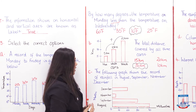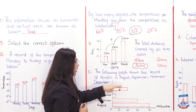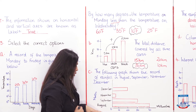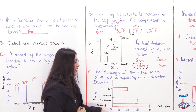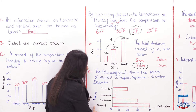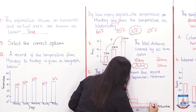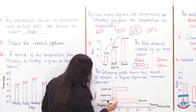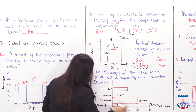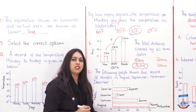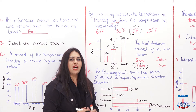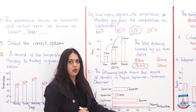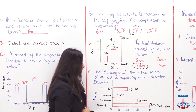Part C: 'The following graph shows the record of rainfall in August, September, November, and December.' A horizontal bar graph is shown with rainfall data for different months. August received 40 mm, September received 30 mm, November received 5 mm, and December received 20 mm. An important tip: whenever you solve graph questions, first write down all the values — this will help you answer the questions more easily.